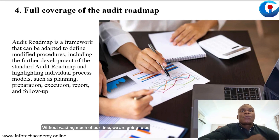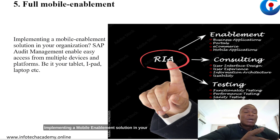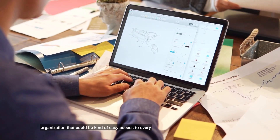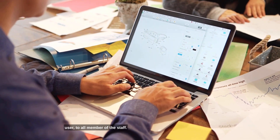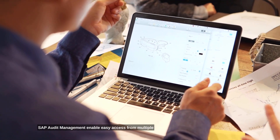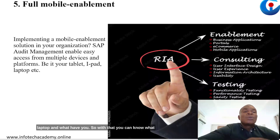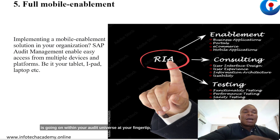Point number five is full mobile enablement. Implementing a mobile enablement solution in your organization provides easy access to all members of staff. SAP audit management enables easy access from multiple devices and platforms — be it your tablet, iPad, or laptop. With that, you can know what is going on within your audit universe at your fingertip.